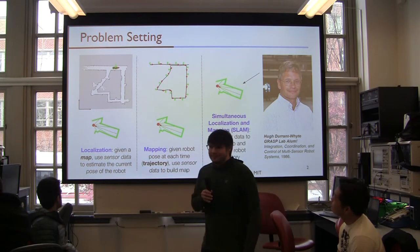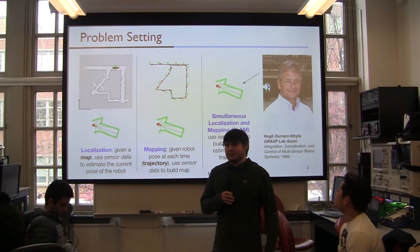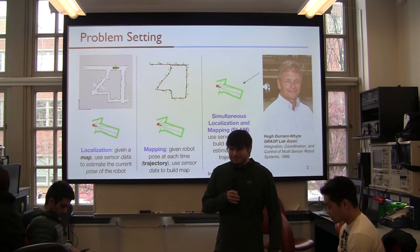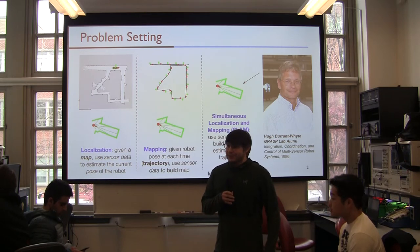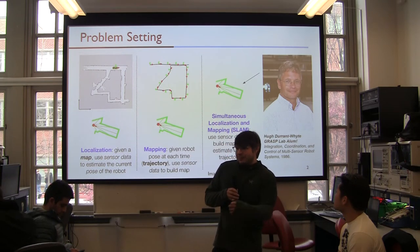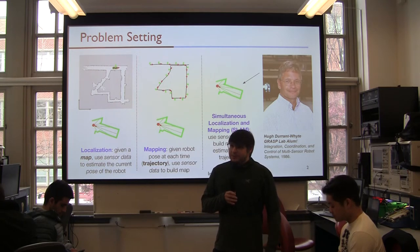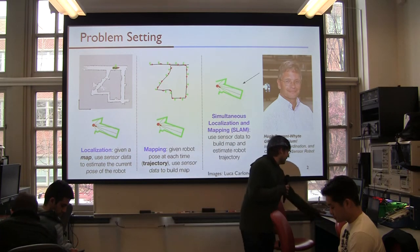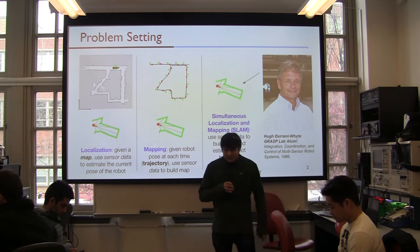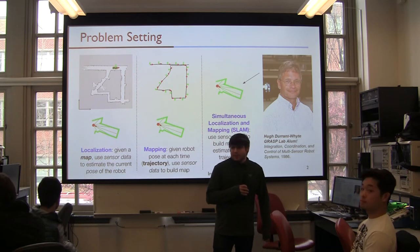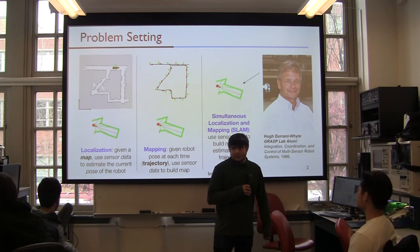The localization problem is this idea that given some map with landmarks the robot could see, and we know where they are, where is the robot relative to them? The mapping problem is sort of the inverse of that — we don't know where the landmarks are but we know where the robot is. Let's place the landmarks accurately in a global frame. Each of these problems by itself is relatively easy, but doing them both at once is hard. Our goal with SLAM is to use sensor data to build a map and estimate the robot's trajectory in the world at the same time.